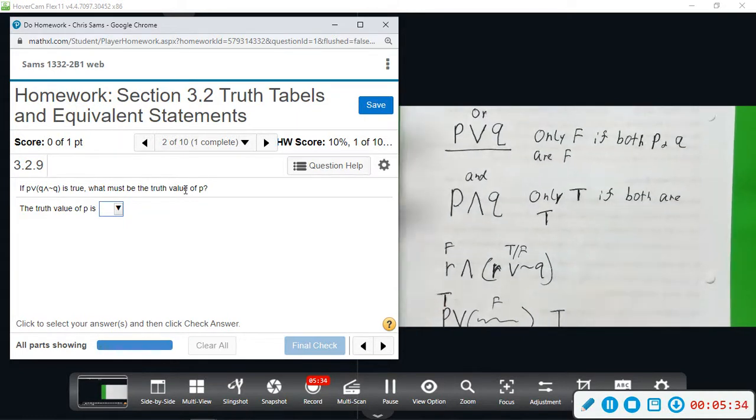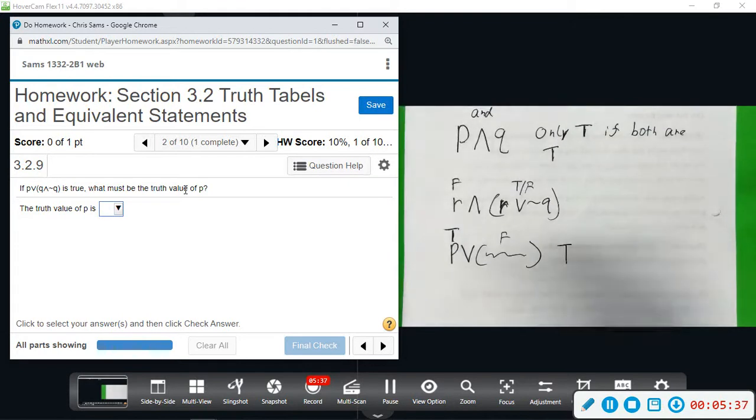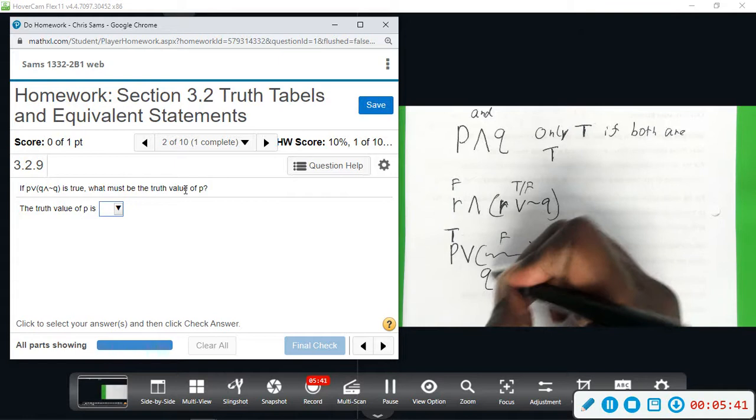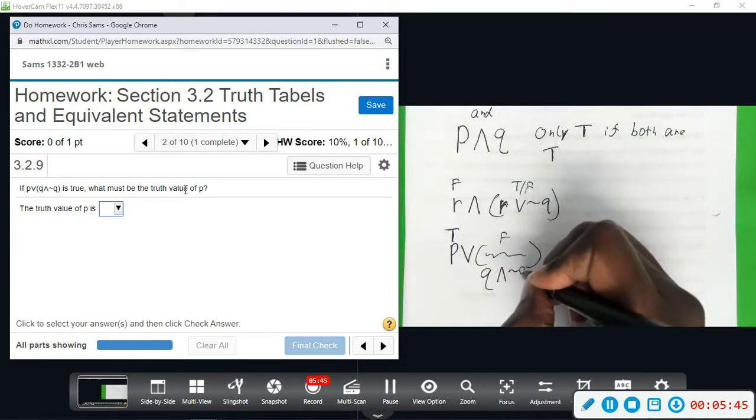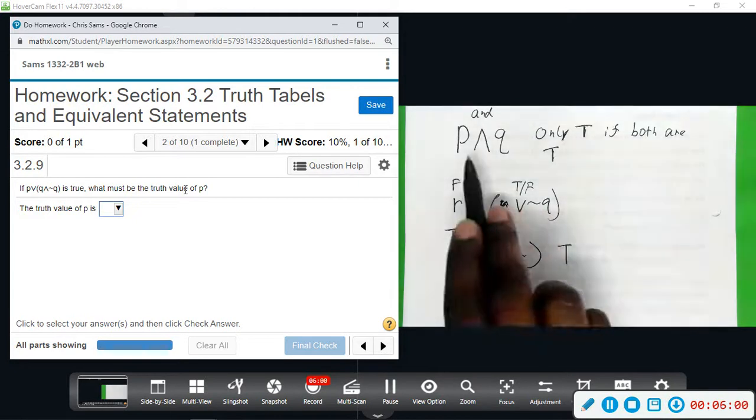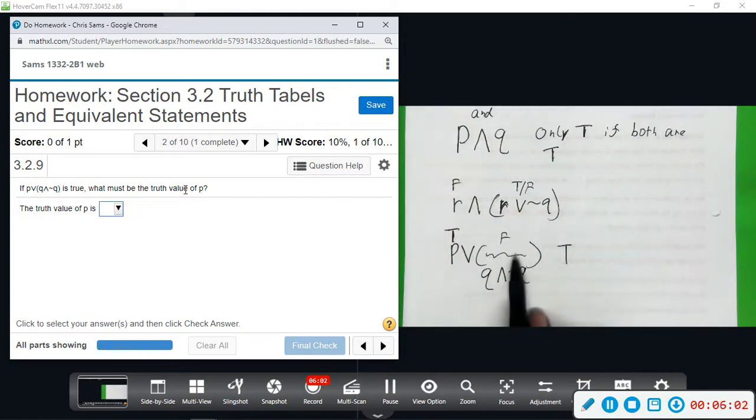And furthermore, if you look at that statement, how can that be true? Because you have Q, which let's say that's true, AND you have NOT Q. So you have something that's true and something that is false. AND is only true if they're both true. So this is guaranteed to be false because you can't have a true AND something that's false at the same time. This is guaranteed to be false, which means that P would have to be true.